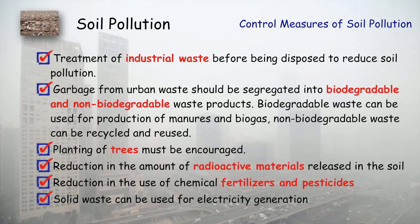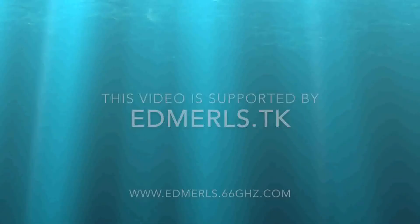How can we control or treat soil pollution? First, treatment of industrial waste before being disposed — we need to treat industrial waste before letting it go into the soil. Secondly, garbage from urban waste should be segregated into biodegradable and non-biodegradable waste. Non-biodegradable materials should be recycled and reused, while biodegradable material can be used for making compost. Planting of more and more trees should be encouraged. Reduction in the amount of radioactive material used and reduction in the use of chemical fertilizers and pesticides. Solid waste can also be used to generate electricity.